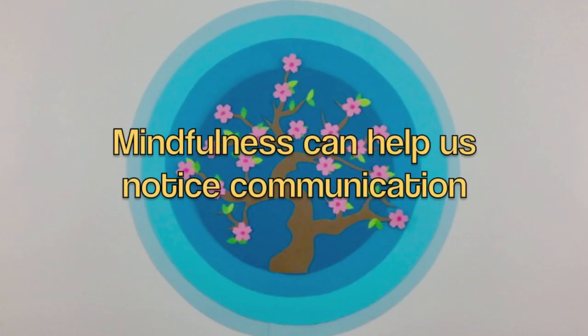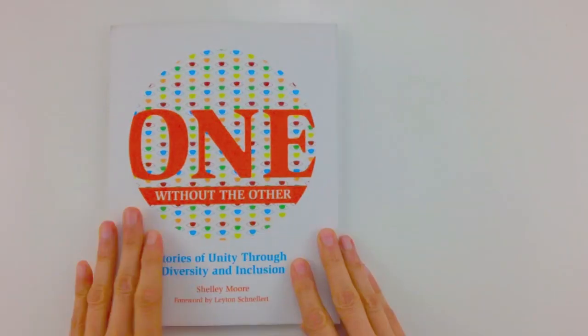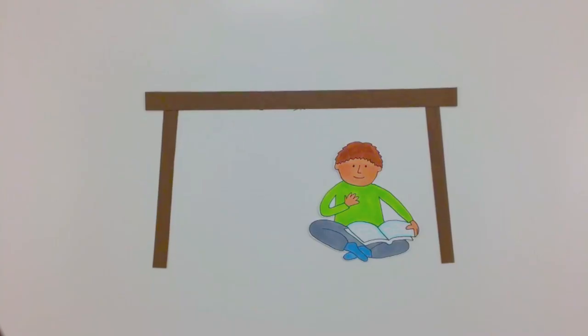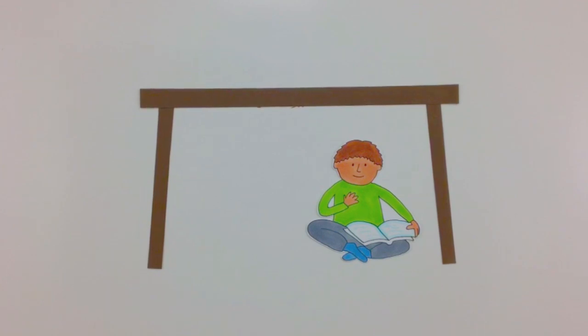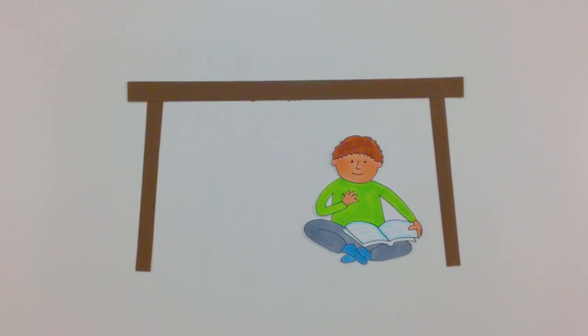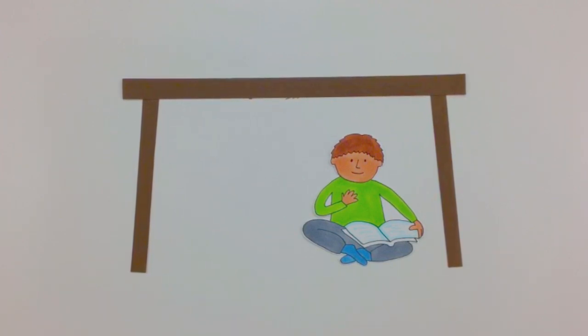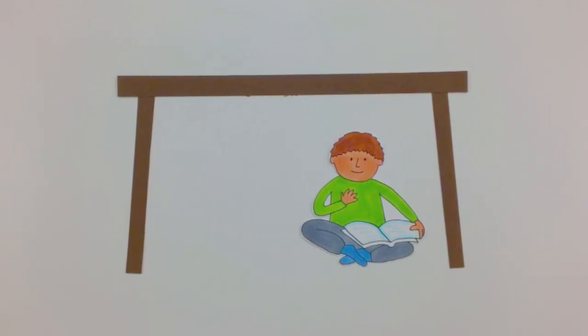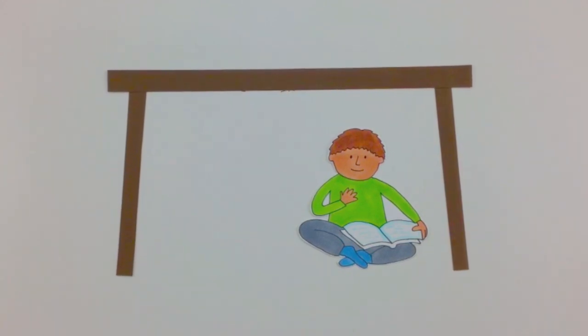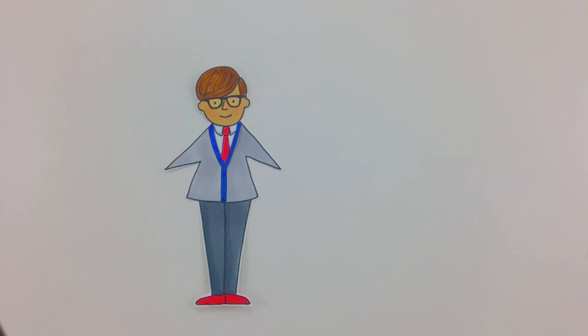Mindfulness can help us notice subtle forms of communication. In her book, One Without the Other, Shelley Moore shares an example of how being mindful can help us notice nonverbal communication. Her student Daniel was sitting under the table flipping repeatedly through the pages of his dictionary. Daniel was deaf and blind with just enough vision to see a bit from one eye. He also had Down syndrome and autism.